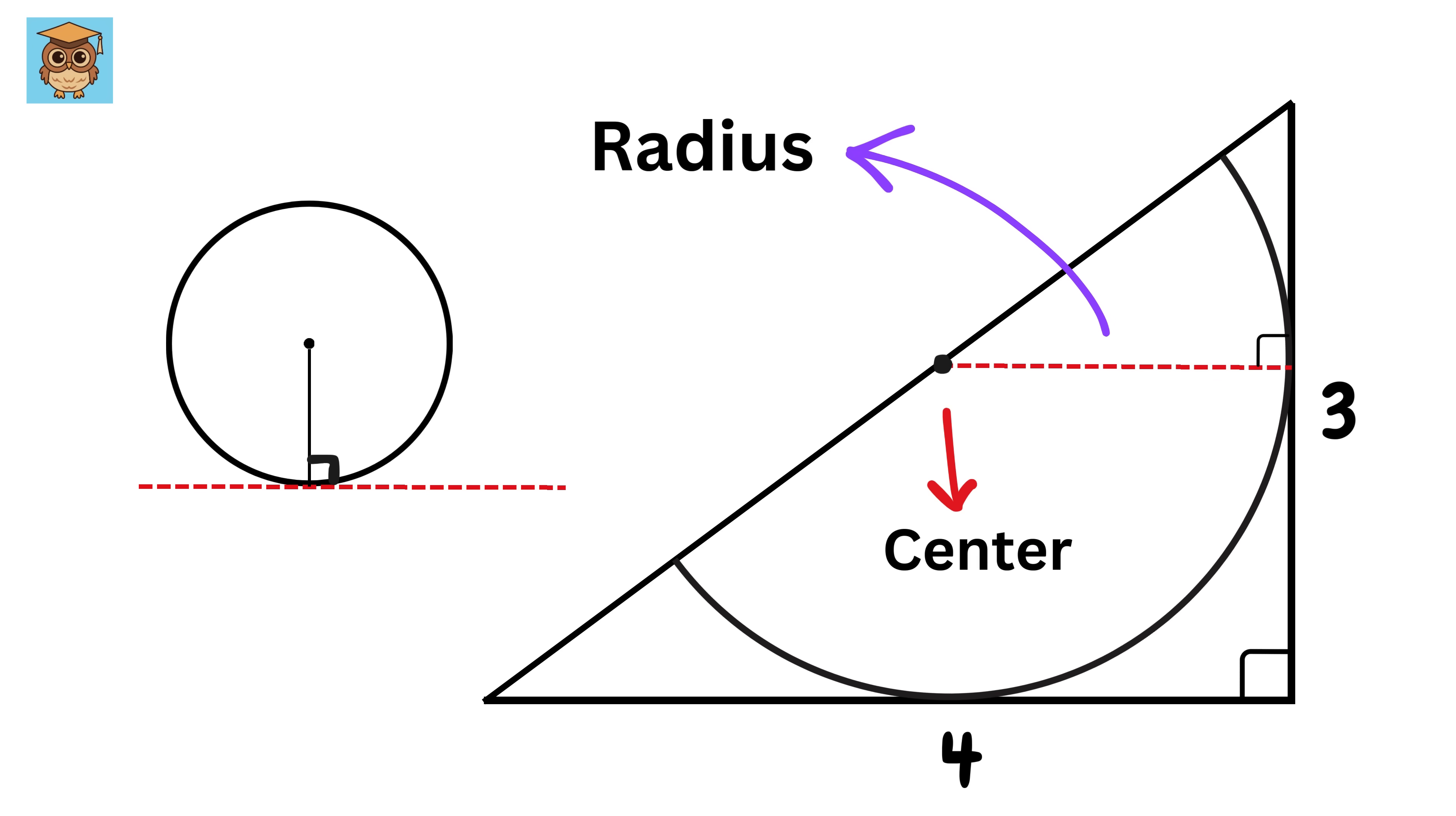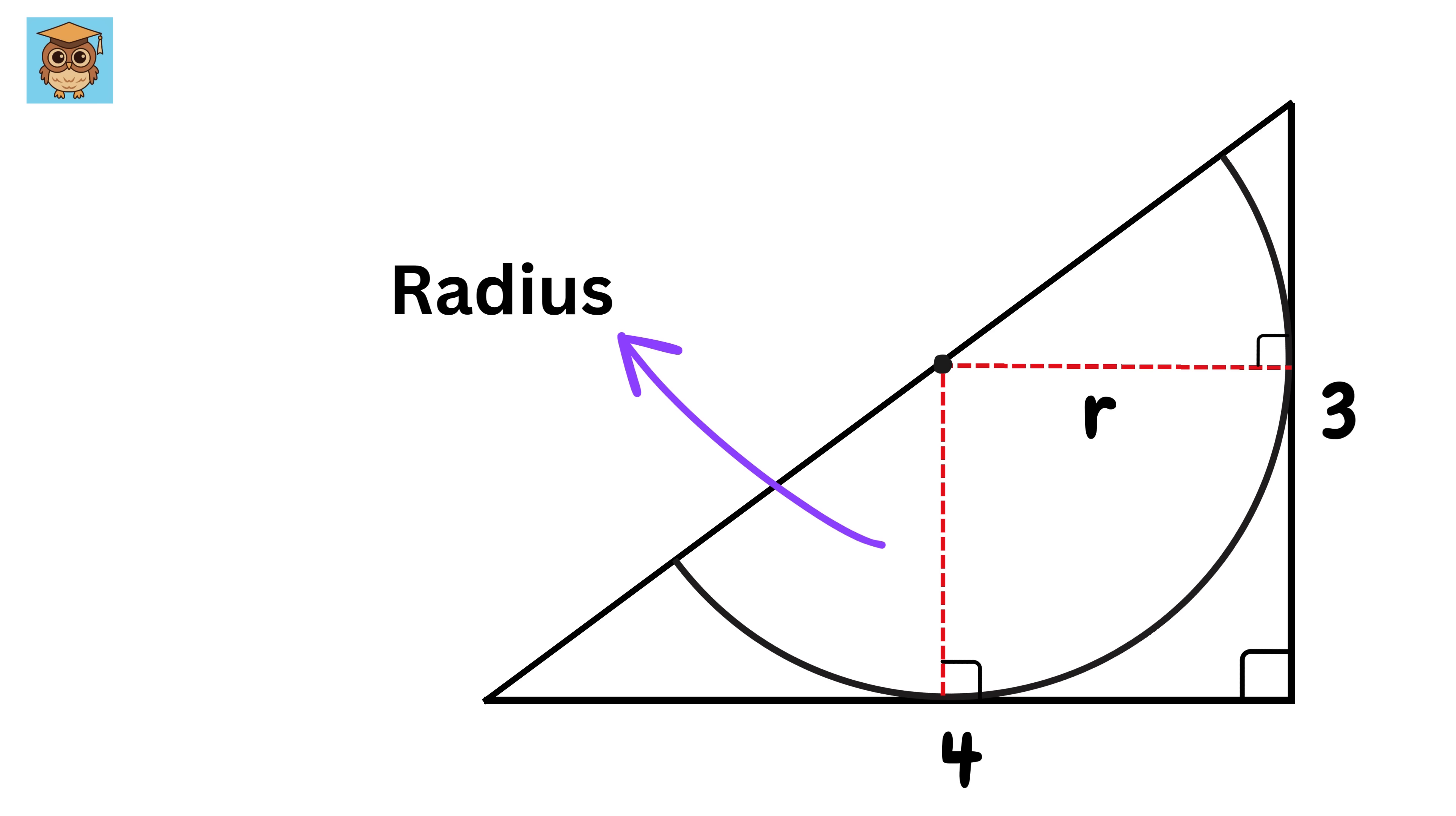So this line will be the radius of this semicircle, and hence this point will be the center of this semicircle. Because remember, I said that the center of this semicircle lies somewhere on the hypotenuse. So let us label this radius as r. Similarly, if we draw this line, which will be perpendicular to this side of the triangle, then it will also pass through the center, right? Therefore, this is also the radius of this semicircle, and thus it will also be r.